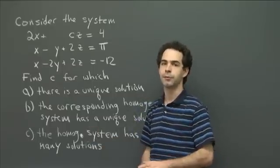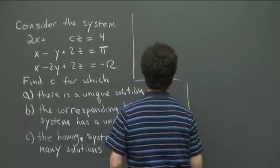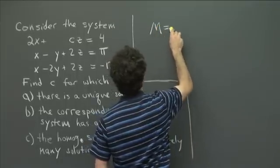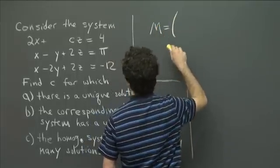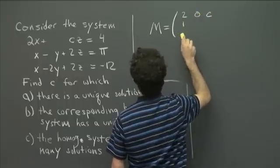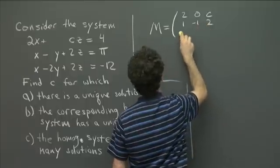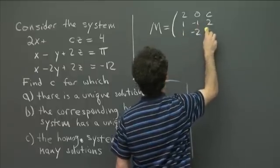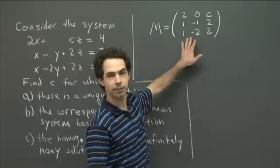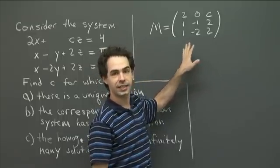We're asking for values of c for which the coefficient matrix is invertible, giving a unique solution. Let's write down the matrix. The coefficient matrix M equals: row 1: 2, 0, c; row 2: 1, minus 1, 2; row 3: 1, minus 2, 2. We want to know for which values of c this matrix is invertible.